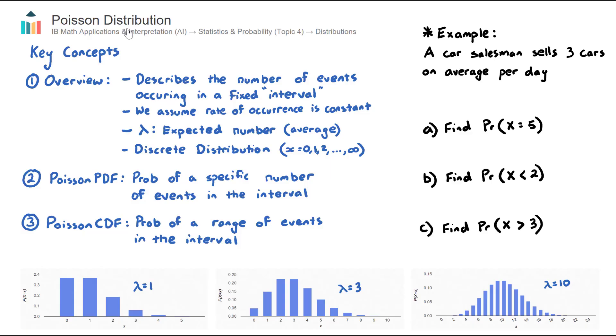Let's get into the theory, and then as we go through Key Concepts 2 and 3, we'll work through a simple example here, and you'll start to understand what this distribution is all about and the types of questions you'll encounter in an IB Math AI exam.